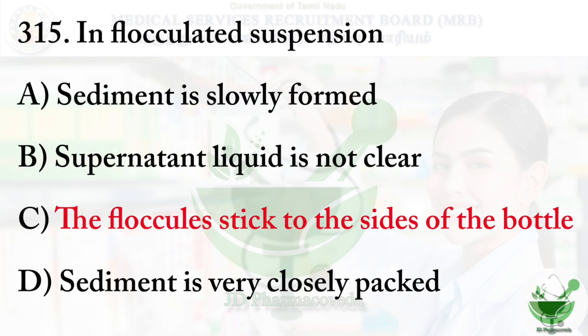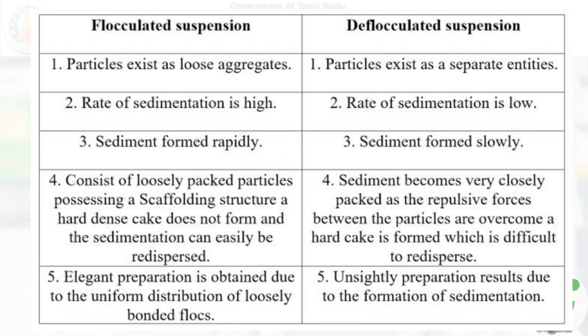Flocculated suspension is a liquid containing particles loosely grouped together in clusters called flocks. These flocks settle quickly and can be easily redispersed. In deflocculated suspension, particles are present as individual particles, the rate of sedimentation is low, but if sedimented it produces caking, making it difficult to redisperse.